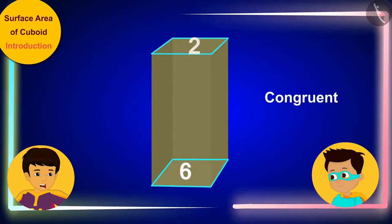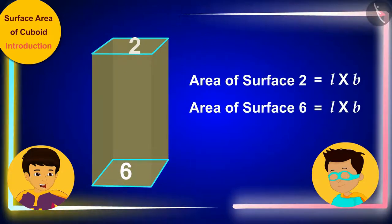Thomas, now these two remaining surfaces are also congruent, and to cover those we will need a paper equal to their area, L times B.